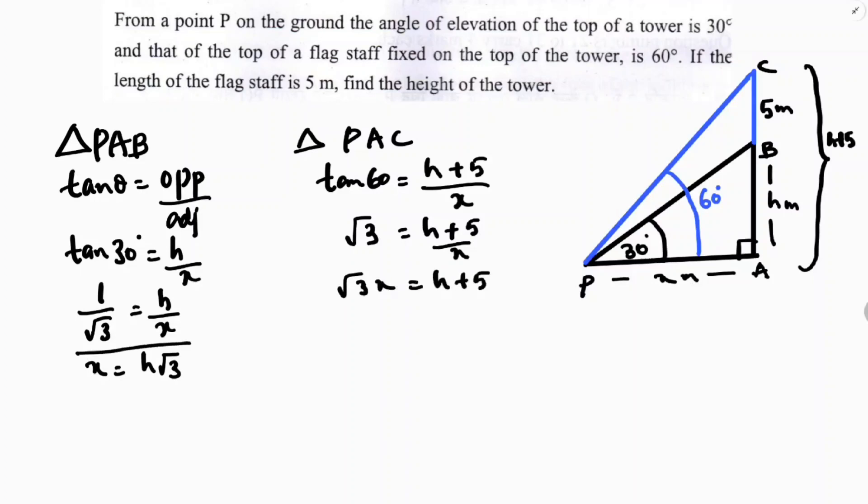Now, from here, the value of x, this value, I will substitute over here. So, root 3 into h root 3 equals h plus 5. Root 3 into h root 3 is 3h equals h plus 5.